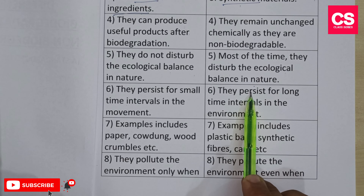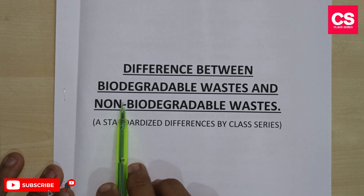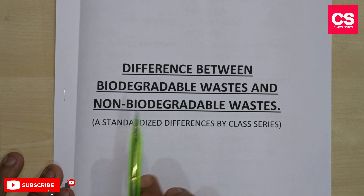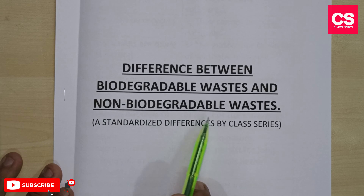The next difference: biodegradable wastes are not harmful to plants and animals, while non-biodegradable wastes are harmful to plants and animals. Last difference: biodegradable wastes are organic, while non-biodegradable wastes are not organic.